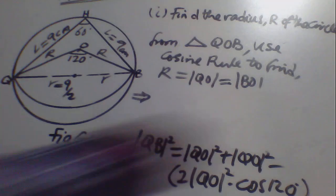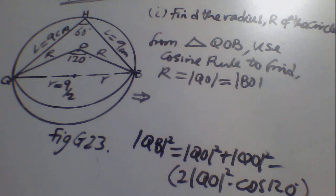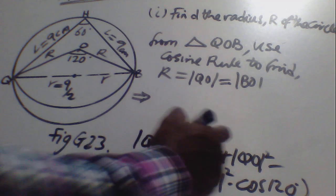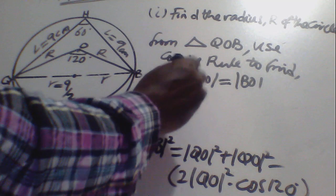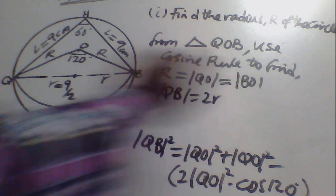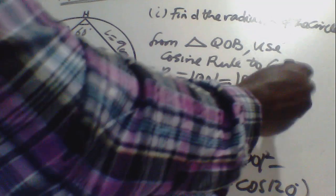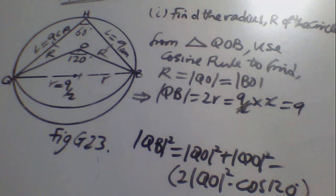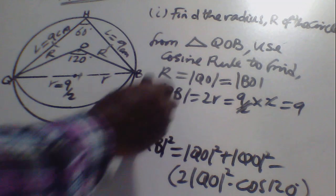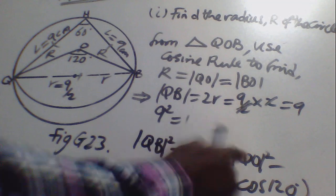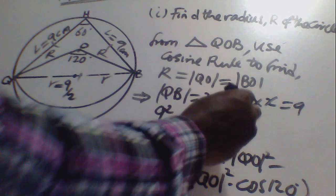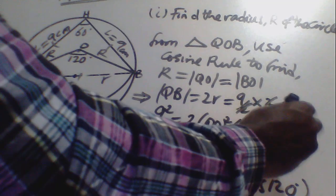Substituting values: QB equals 9 cm (the diameter of the cone base), so 9² equals 2QO²(1 - cos120°). We have 81 equals 2QO²(1 - cos120°). Since cos120° equals -1/2, we substitute: 81 equals 2QO²(1 - (-1/2)).